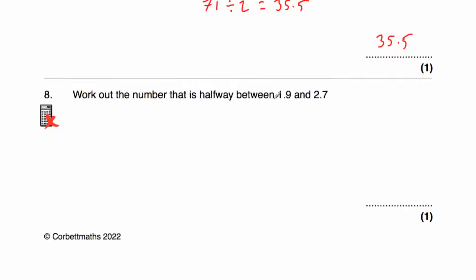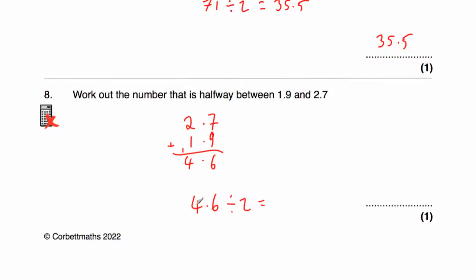Question eight says: work out the number that's halfway between 1.9 and 2.7. This is non-calculator, so let's line them up: 2.7 plus 1.9. 7 plus 9 is 16, put our 6 down and carry a 1. 2 plus 1 plus 1 is 4. So adding 1.9 and 2.7 gives us 4.6. Half of 4.6 is 2.3, because half of 4 is 2 and half of 0.6 is 0.3. So the answer is 2.3.